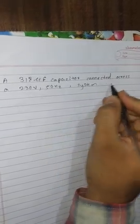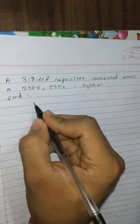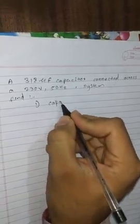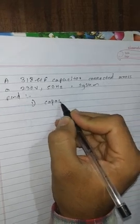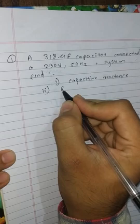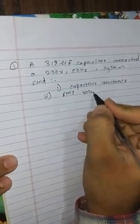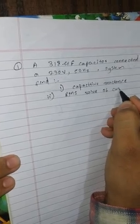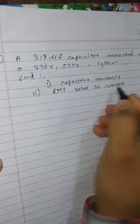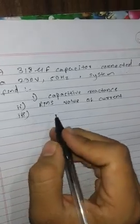First, capacitive reactance. Second, RMS value of current. And third, equation of voltage and current.